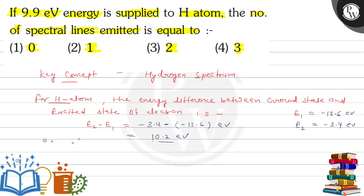The minimum energy required is 10.2 electron volt. When energy less than this is applied, no emission occurs.